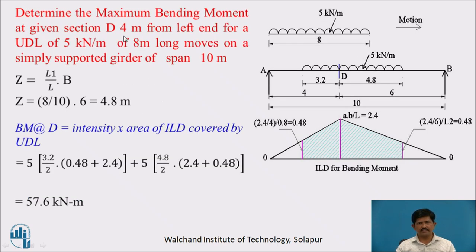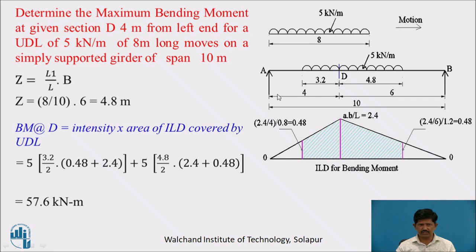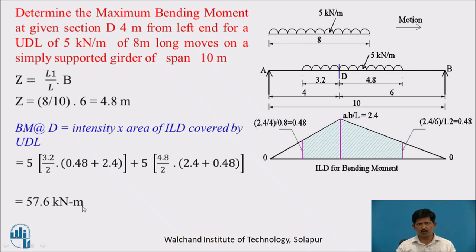For the numerical example: find maximum bending moment at section D, 4 meters from the left end, for a UDL of 5 kN/m with length L1 = 8 m on a girder of span L = 10 m. Z = (8/10) × 6 = 4.8 m to the right of D, and the remaining 3.2 m is to the left. The bending moment is intensity multiplied by the trapezoidal area of ILD covered by the UDL, giving a maximum bending moment of 57.6 kNm.